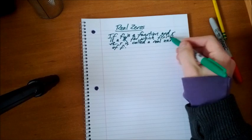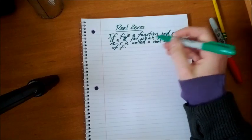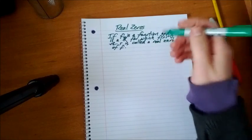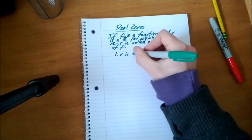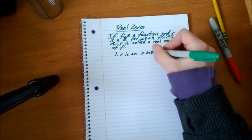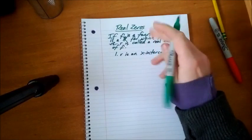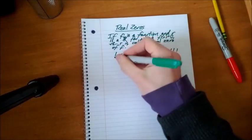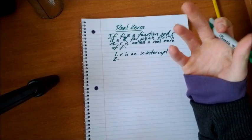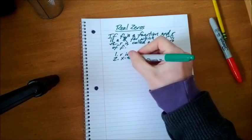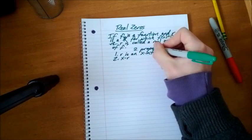You notice where f(r) = 0, f(r) is the same thing as y. So where y = 0, r is called a real zero of f. We'll have our two properties here. One, r is an x-intercept. Another important property: x - r is a factor of f.